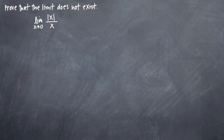In this particular problem, we've been asked to prove that the limit does not exist. The limit that we're trying to prove does not exist is the limit as x approaches zero of the absolute value of x divided by x.